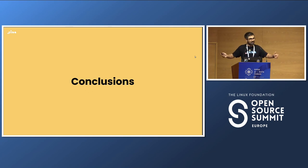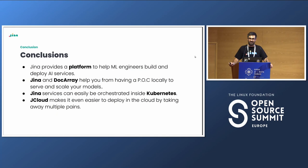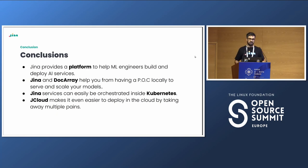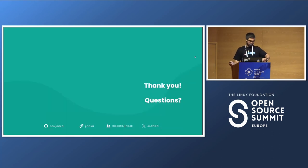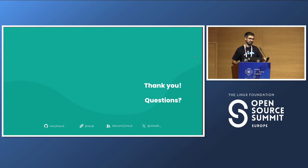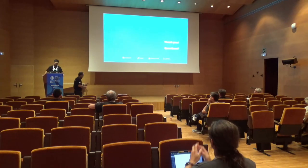The conclusions: I have tried to make clear how GINA provides a platform to help ML engineers build and deploy AI services. We have seen how DocArray helps you from having a POC to serving with GINA. How GINA can remove its orchestration layer to move it to Kubernetes. And how jCloud can make this even more seamless and easy by providing this operator and API. Thank you, and I'm happy to take any questions.